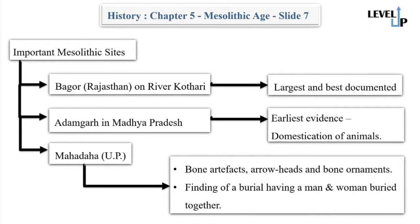Now we will discuss important Mesolithic sites. The first is Bagor in Rajasthan, on the river Kothari — this is one of the largest and best documented Mesolithic sites in India. Next is Adamgarh in Madhya Pradesh, which provides the earliest evidence for the domestication of animals.